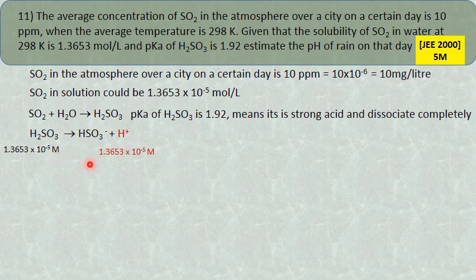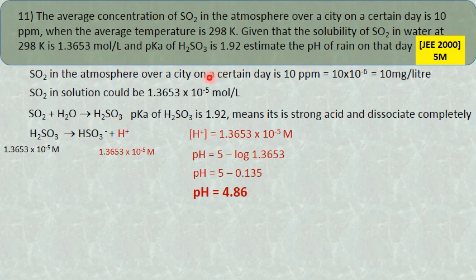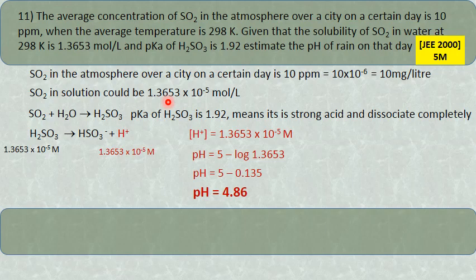pH = −log(1.3653×10⁻⁵) = 5 − log(1.3653). On simplification, pH = 4.86. Note that the normal pH of rainwater is 5.6, but for this particular scenario with SO₂ contamination it is 4.86. This question involves both pKa and solubility factors.